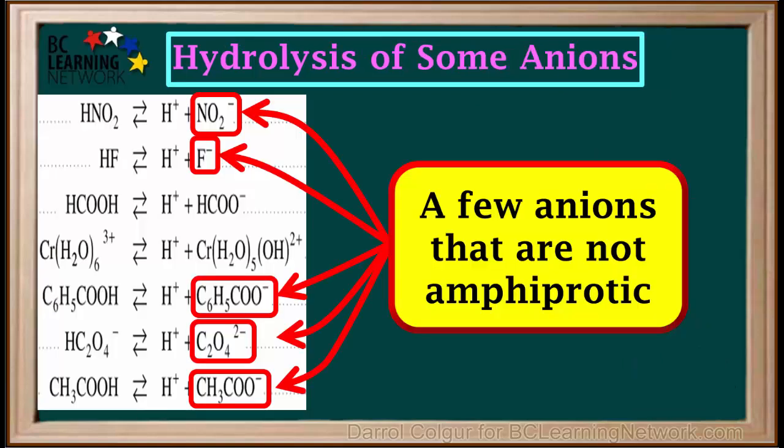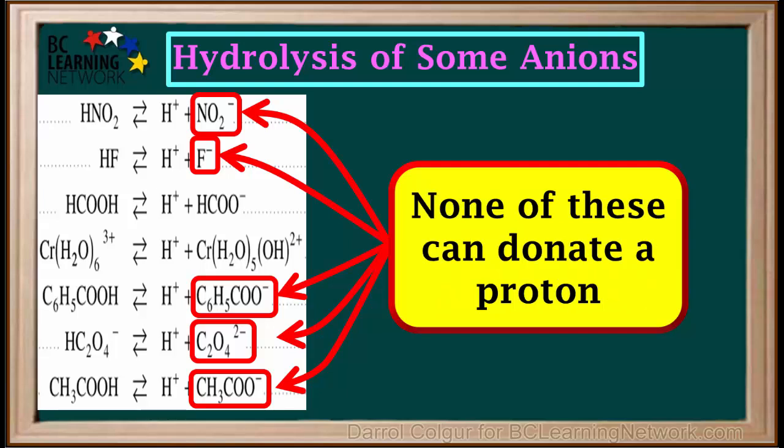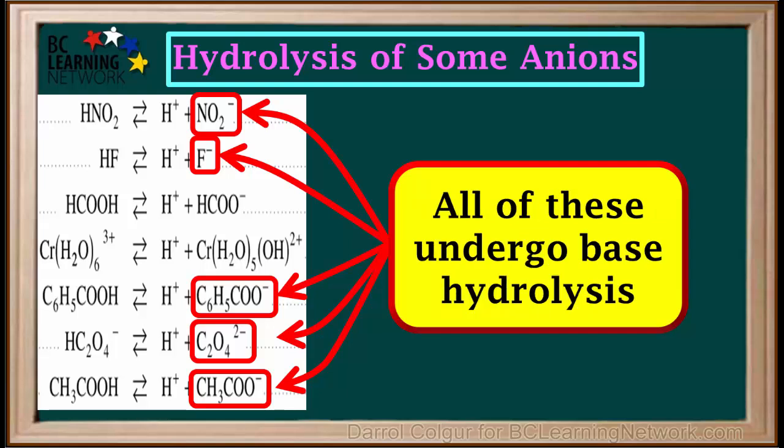Looking on the right side of the acid table, we can find a few other non-amphiprotic anions that we can write hydrolysis equations for. None of these are able to donate a proton to water. They act only as bases, not as acids. So all of these can undergo only base hydrolysis.